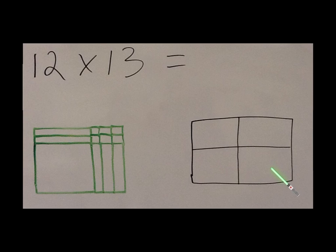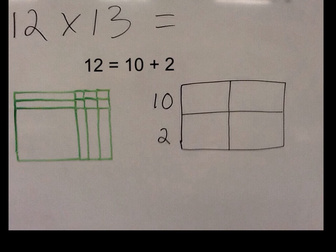This time we're going to be using just a simple box method with rows and columns to find out what the answer is. So we'll start with the factor 12 and we're going to break it down into its expanded form, which is why we've been practicing that so much. So 12 is really 10 plus 2. In the top row we're going to write 10 and we'll write 2.